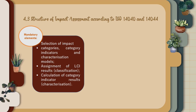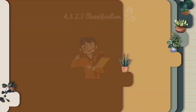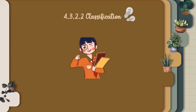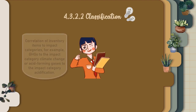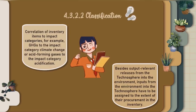Second are optional elements: Calculation of the magnitude of impact category indicator results relative to reference information — normalization, grouping, weighting. Next, classification: Correlation of inventory items to impact categories — for example, greenhouse gases to the impact category climate change, or acid-forming gases to the impact category acidification. Besides output-relevant releases from the technosphere into the environment, inputs from the environment into the technosphere have to be assigned to the extent of their procurement in the inventory.